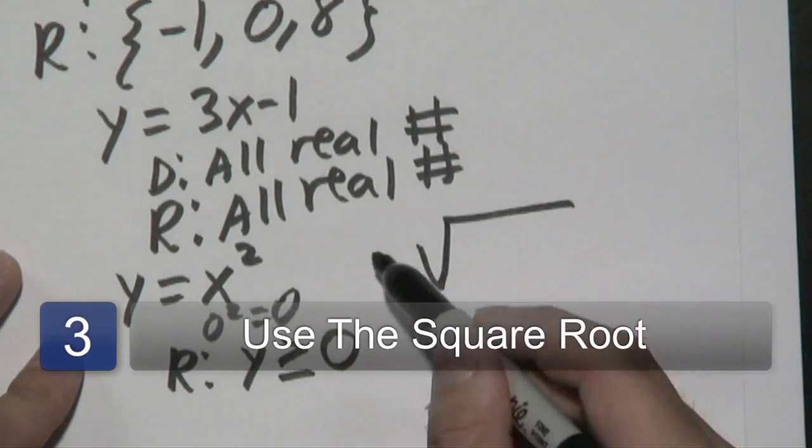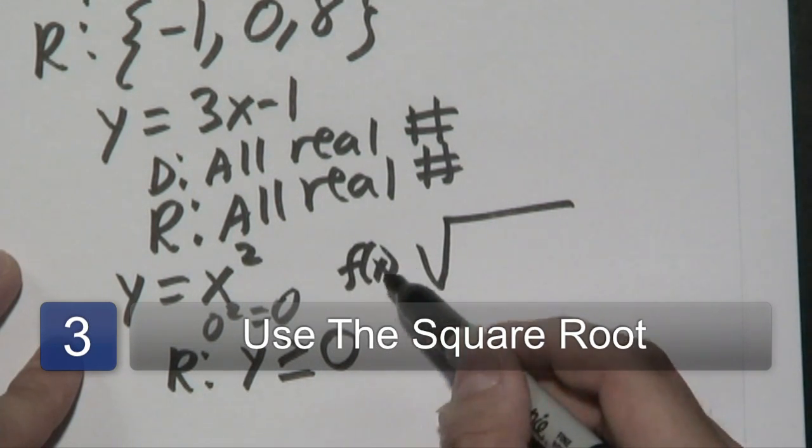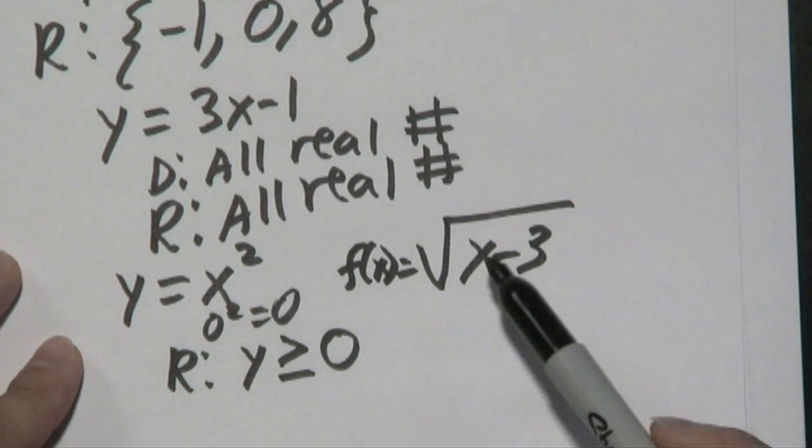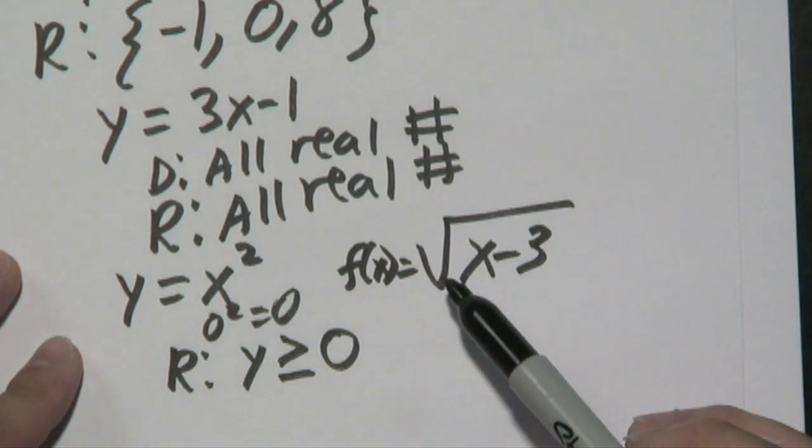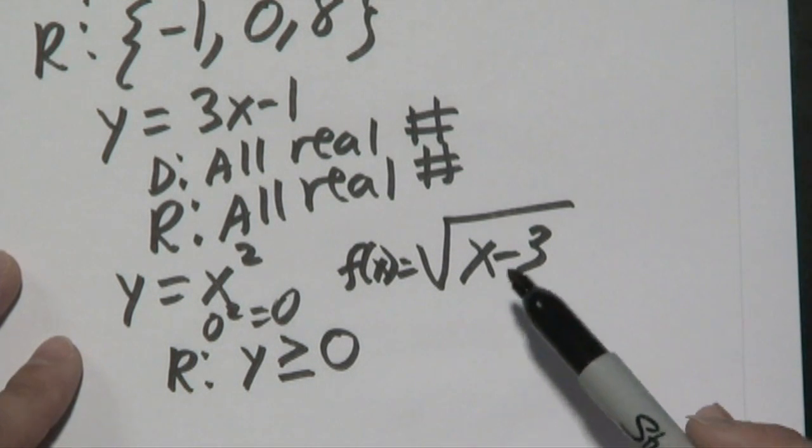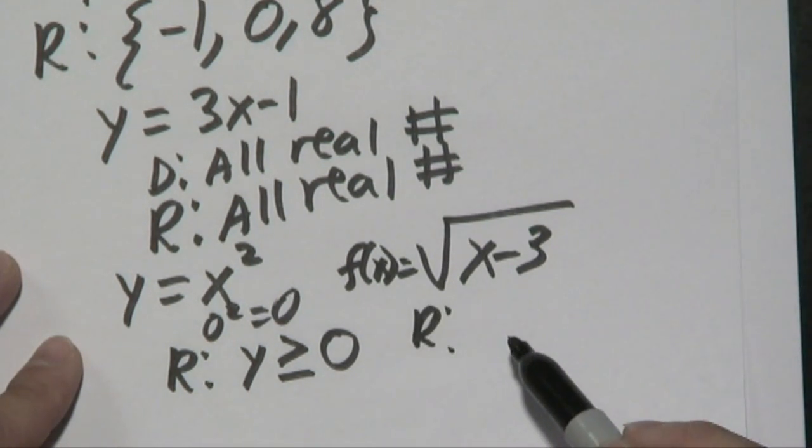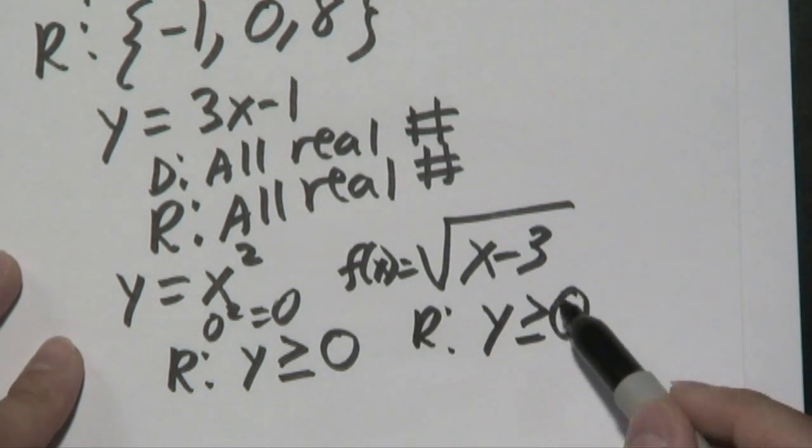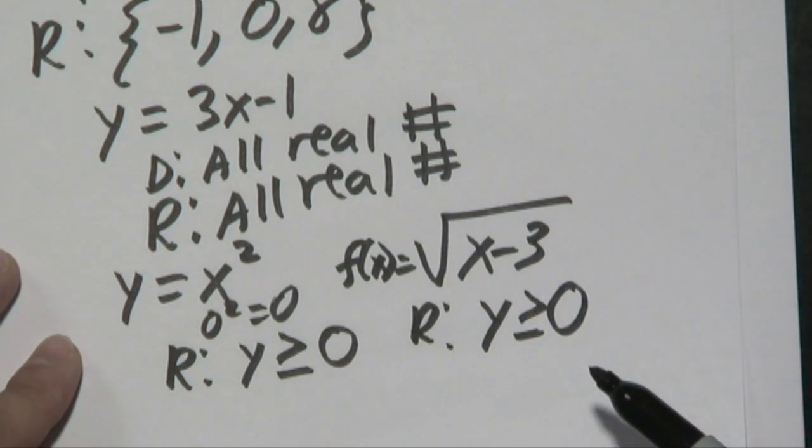Now if you have a square root, for example, let's just say f(X) = √(X - 3). It's very similar in this particular case because for square roots, you know square roots can only be positive or zero. So in terms of the range for this particular function, it's Y ≥ 0 as well, because square roots have to be positive and zero.